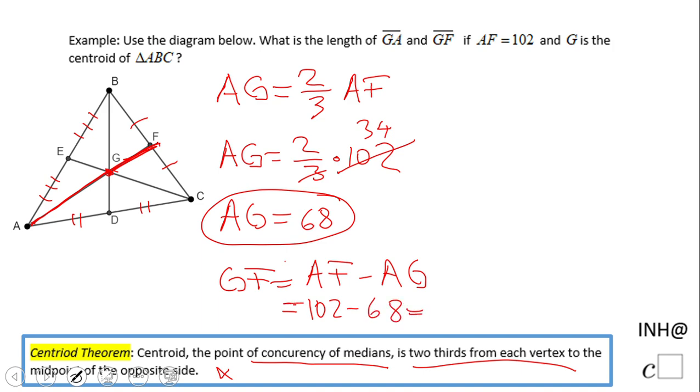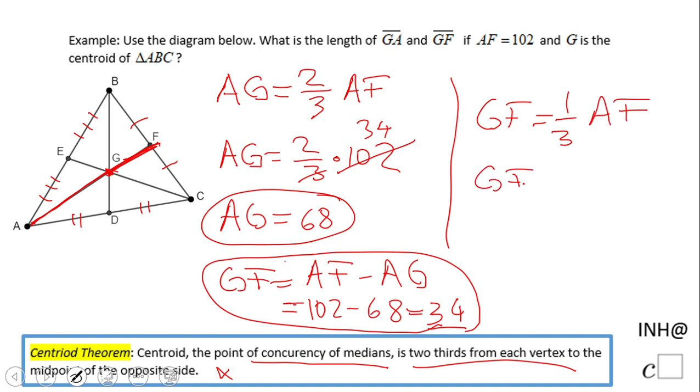Another way to do it, which is good to see, is that GF is one-third of AF. And you plug in 102 and you get the same answer.